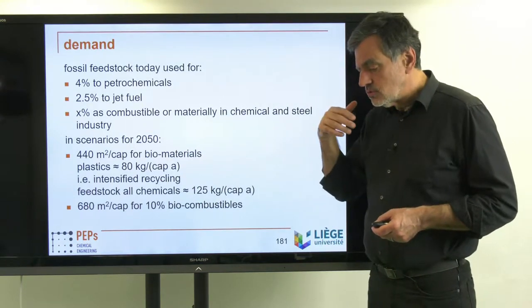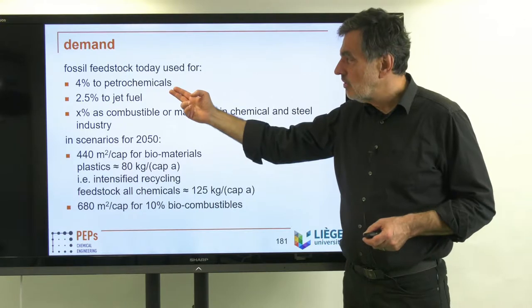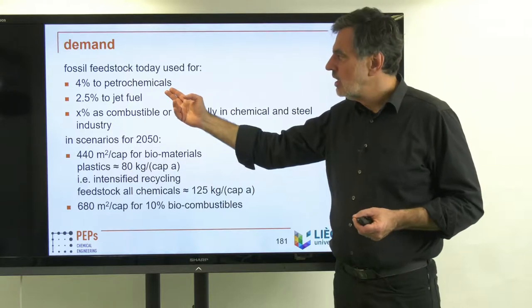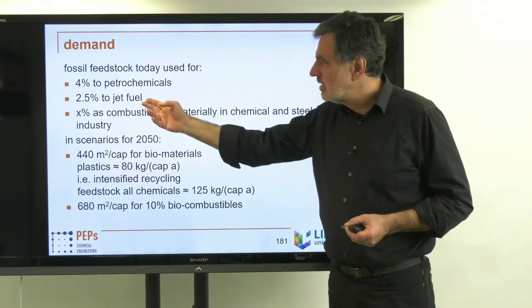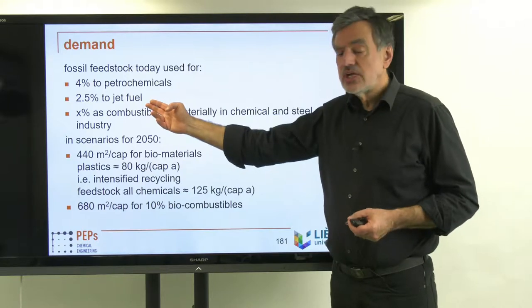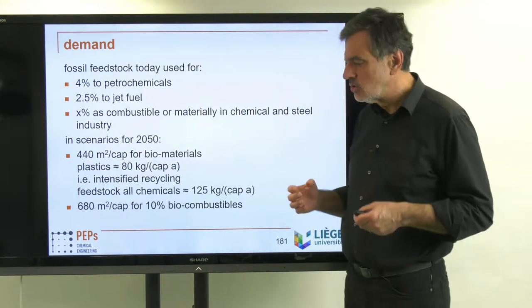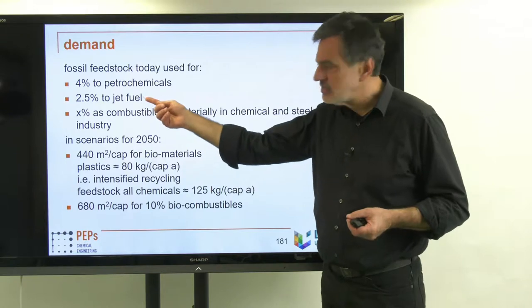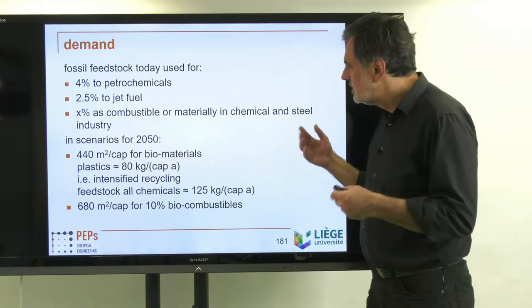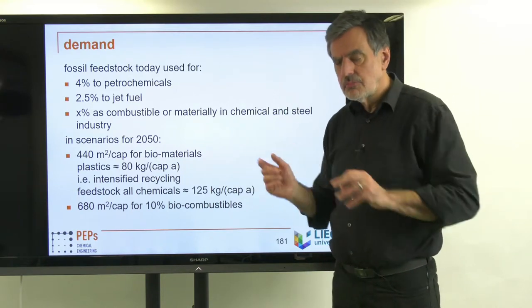We also need to relate this to current demands. For fossil feedstock today, we use only 4% of all fossil feedstocks to produce petrochemicals. On the other hand, we use 2.5% for jet fuel, which can also be generated bio-based. There is another fraction of at least the same order of magnitude as jet fuel — possibly significantly larger — used as combustible or material in chemical industry and steel industry.